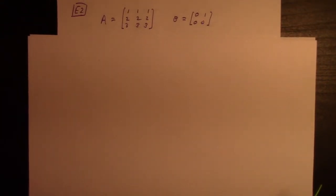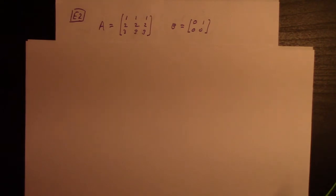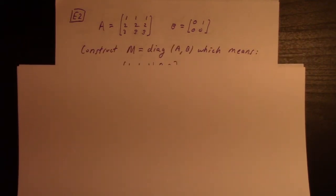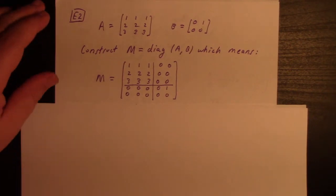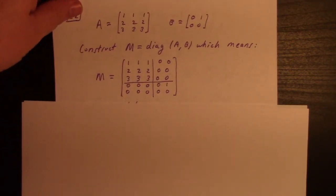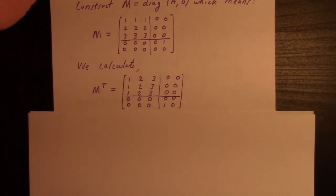Example two is about transposes. Suppose we have matrices A and B. I construct the block diagonal matrix with those as blocks, and then look at the transpose of that.